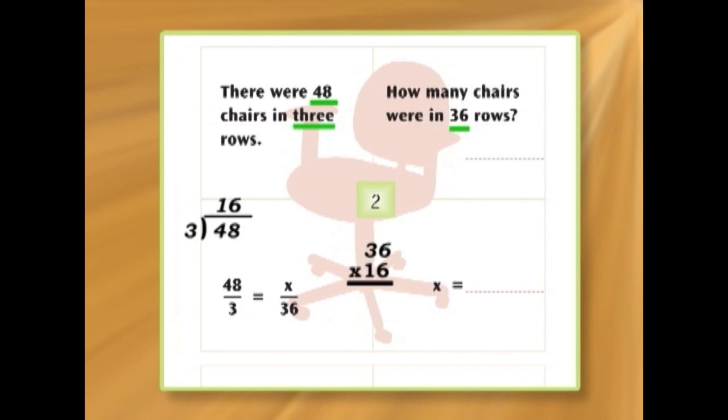1 times 6 is 6. 1 times 3 is 3. So, that's 3, 6, 0. Because we're multiplying by 10. 6 times 6, 36. Write the 6, carry the 3. 6 times 3, 18. And 3 makes 21. Now, if we add 360 and 216, we get 576.